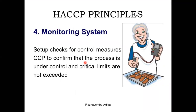The fourth principle is the monitoring system. Once you have decided the critical limit, we have to check whether it works properly or not. We have to establish a monitoring system such that it gives proper control regarding those measures and ensures limits are not exceeded. For example, in the pasteurization process, the temperature and time combination should not exceed or fall below the required level — we check that through the monitoring system.